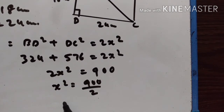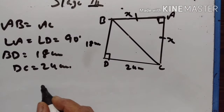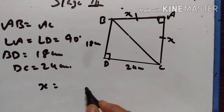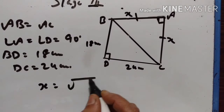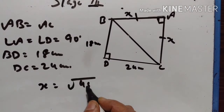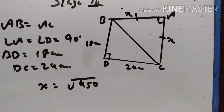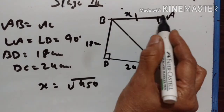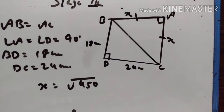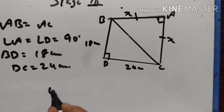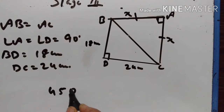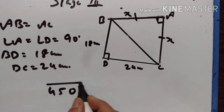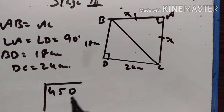So X is equal to square root of 450. Therefore AB is equal to square root of 450, which we now calculate up to 2 decimal places.